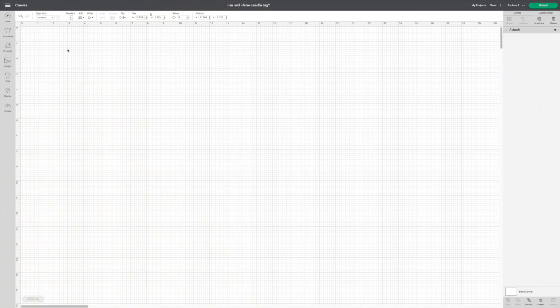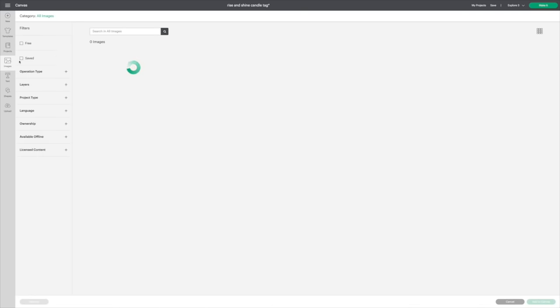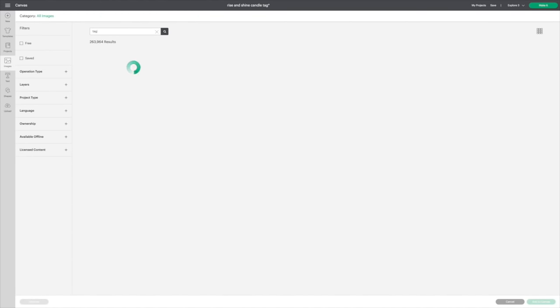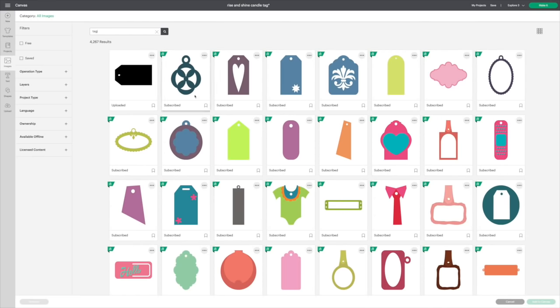While all of the wax was drying, I was ready to create the custom tag for my candle. I started a new project in Cricut Design Space and then went to their images and just typed in the word tag and searched through the tons of images, selecting some of the ones that I really liked.